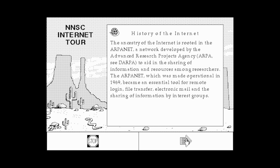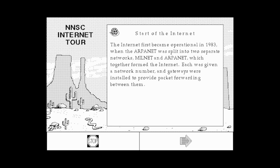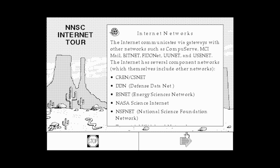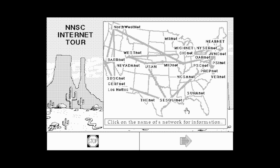'The ancestry of the internet is rooted in the ARPANET, a network developed by the Advanced Research Projects Agency to aid in the sharing of information and resources among researchers. The ARPANET, which was made operational in 1969, became an essential tool for remote login, file transfer, electronic mail, and the sharing of information.' Yeah, that's got to be the original internet. 'The internet first became operational in 1983 when the ARPANET was split into two separate networks: MILNET and ARPANET. The internet has several component networks, which themselves include other networks.' And here's a map — wow, I bet this is a lot different nowadays too!